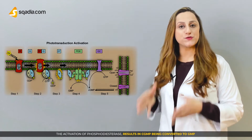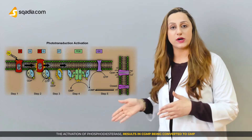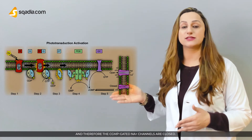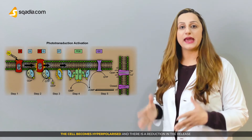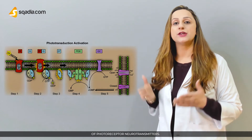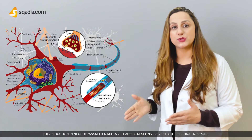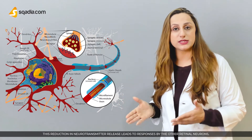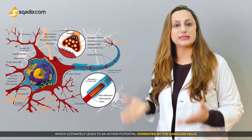The activation of phosphodiesterase results in cyclic GMP being converted to GMP, and therefore the cyclic GMP-gated sodium channels are closed. The cell becomes hyperpolarized and there is a reduction in the release of photoreceptor neurotransmitters. This reduction in neurotransmitter release leads to responses by the other retinal neurons, which ultimately leads to an action potential generated by the ganglion cells.